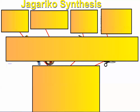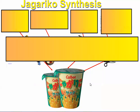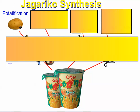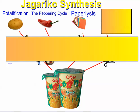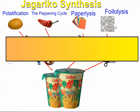To use an analogy, I'm going to use one of my favorite snacks here in Japan: Jagariko. I love this stuff — it's just like dried french-fried goodness. Imagine that when people try to make these things, several things are necessary. You need some potatoes — I'll call that process 'potatification.' You need all the little peppers — the 'peppering cycle.' You need paper for the packaging — 'paperification.' And you need some foil for the top.